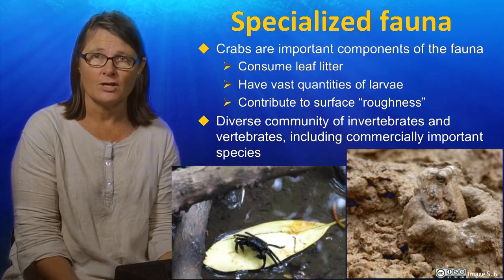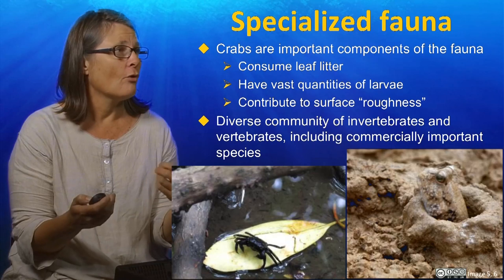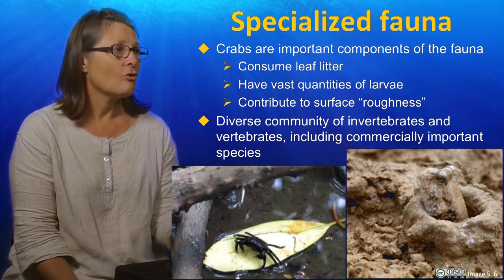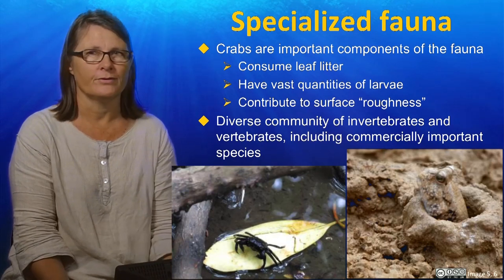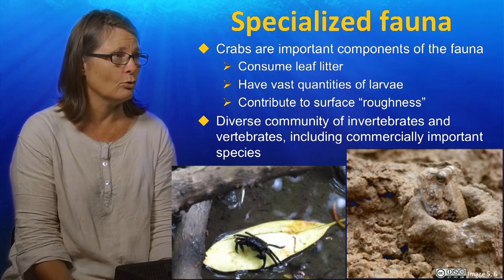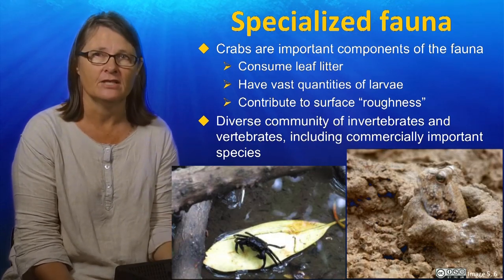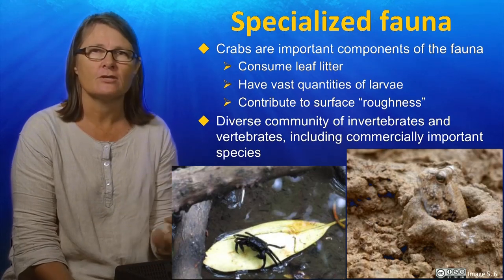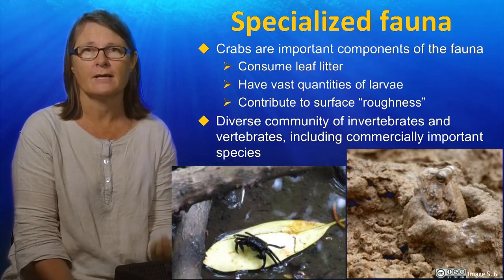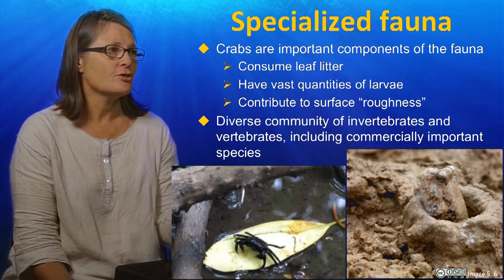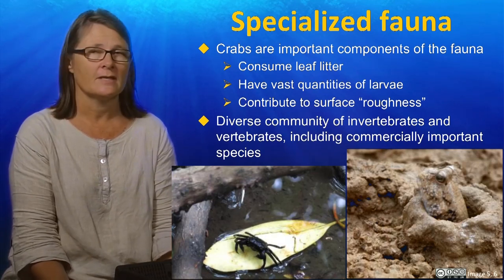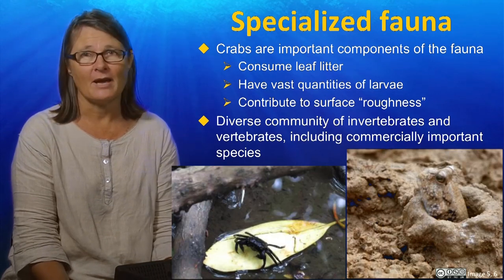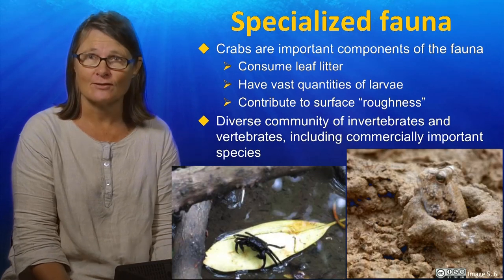I've spent most of my time talking about the special adaptations of the trees, but there are also a whole range of specialised fauna that live in mangrove forests. Crabs, shown in this first picture, are extremely important. They consume leaf litter that drops to the forest floor, they have vast quantities of larvae that are food for other organisms and that are released into tidal waters, and the crab burrows contribute to the roughness and friction offered by the habitat to the water. There's also a hugely diverse community of invertebrates and vertebrates, including some commercially important fish species. This second picture shows a mudskipper, one of the most charismatic fish of mangrove habitats.